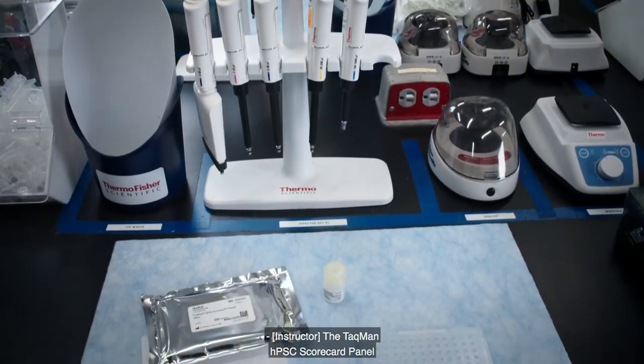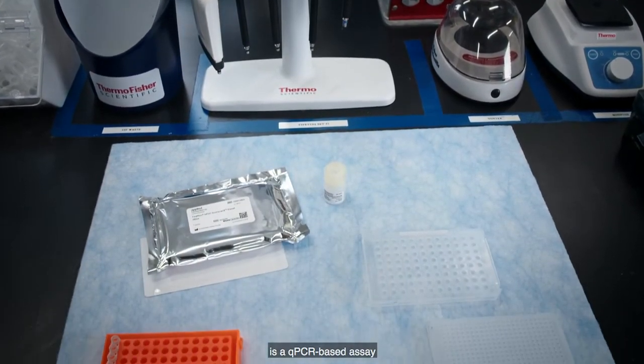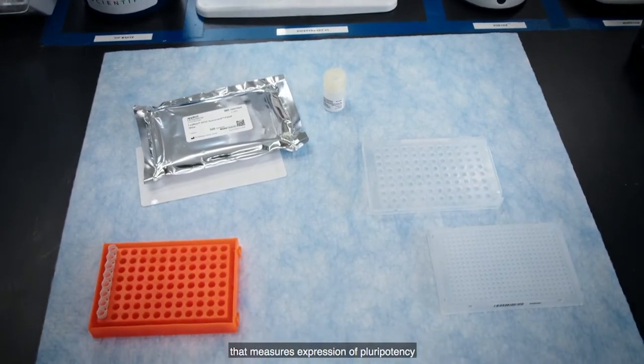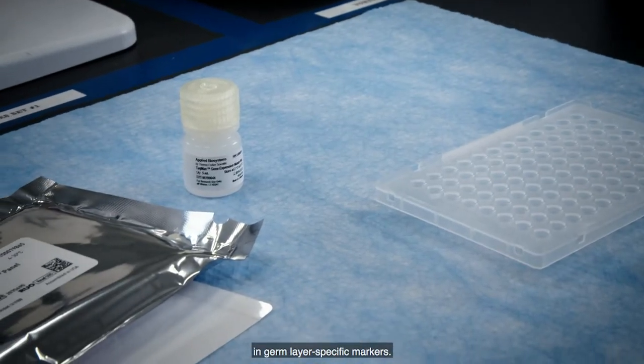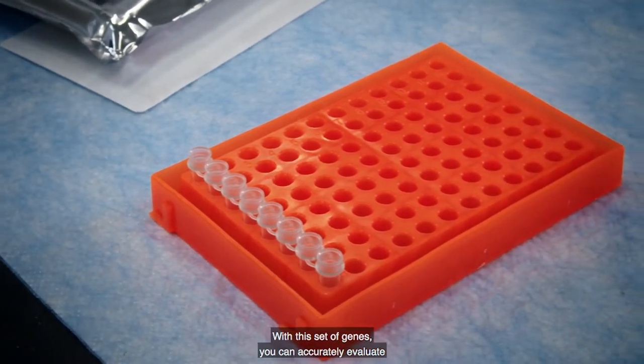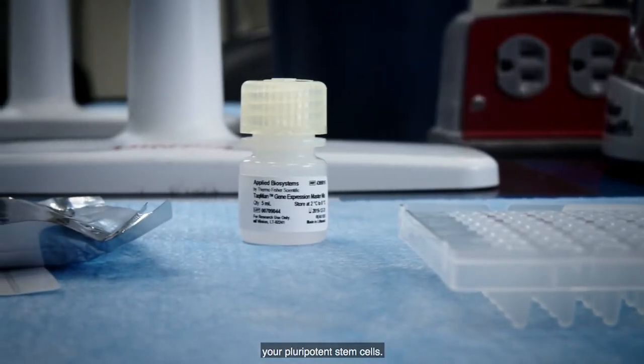The TACMAN HPSC Scorecard Panel is a qPCR-based assay that measures expression of pluripotency and germ layer specific markers. With this set of genes, you can accurately evaluate your pluripotent stem cells.